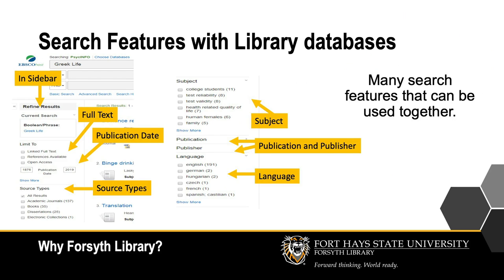Databases have many search features that can be used together. You can limit results by publication type, publication date, language, document format, scholarly or peer-reviewed articles, book reviews, topics, authors, journals, and more. This can help you save time and frustration when searching and narrow down those thousands of results.